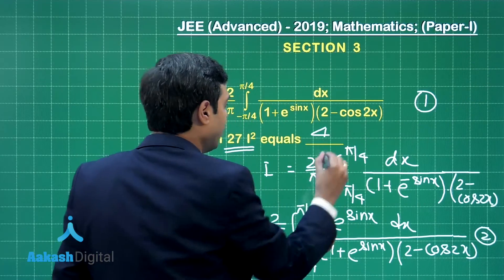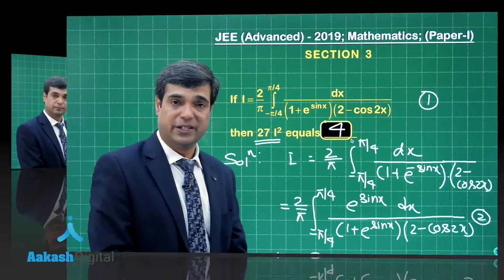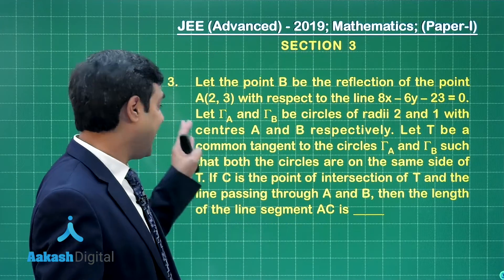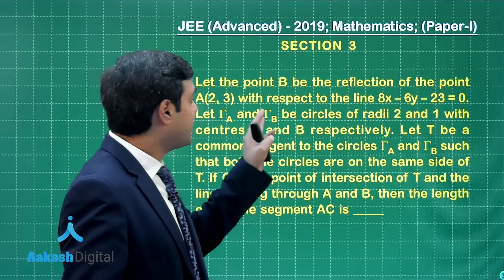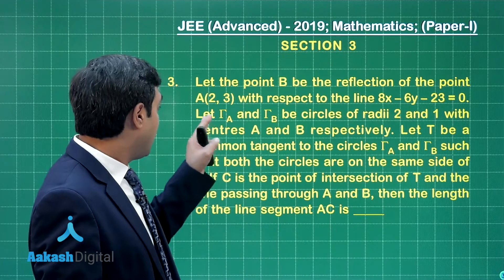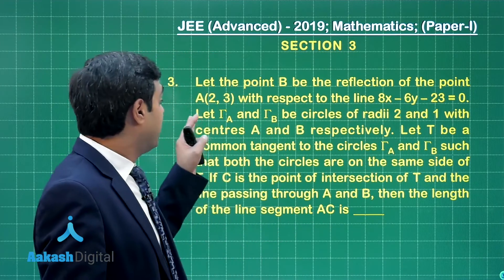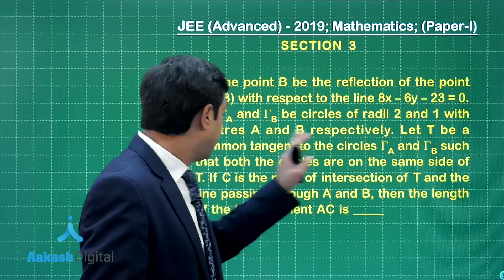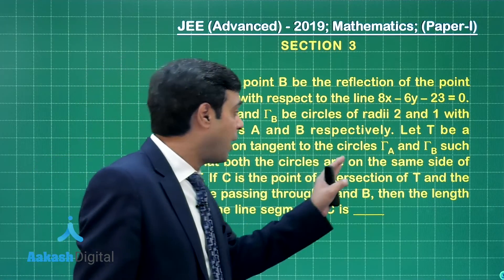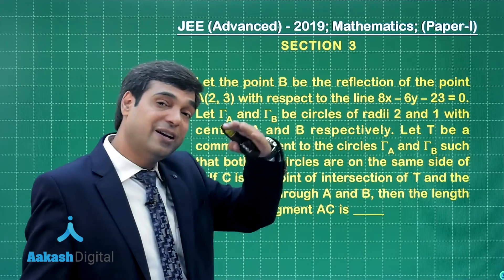The correct answer for Question 2 is 4. Moving on to Question 3: let point B be the reflection of point A = (2, 3) with respect to the line 8x - 6y - 23 = 0. Let γ_A and γ_B be circles of radii 2 and 1 respectively with centers A and B.